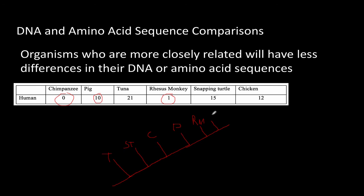We're not identical, so we couldn't be written on the same line. But you can put chimps here and humans here. So when you do a cladogram based on the number of differences, the one with the most differences is the one that starts - and this is our out group - the one that has the most differences from the one that winds up at the very end of the cladogram. And then you just go: most differences, a little closer, a little closer, a little closer, until finally you get the most closely related.